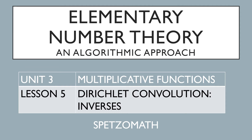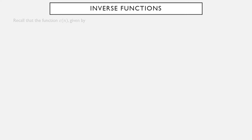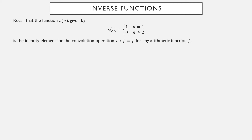We've talked about Dirichlet convolution as an operator on arithmetic functions, so now we're going to talk about finding inverses with respect to that operation. The function epsilon of n is given by this formula: epsilon of 1 equals 1, and epsilon of anything larger equals 0. It's the identity element for Dirichlet convolution — the convolution of epsilon with any arithmetic function f is just f itself. We established this in the previous video.